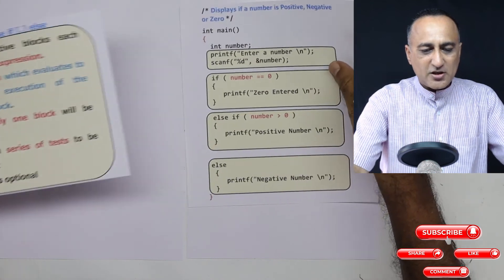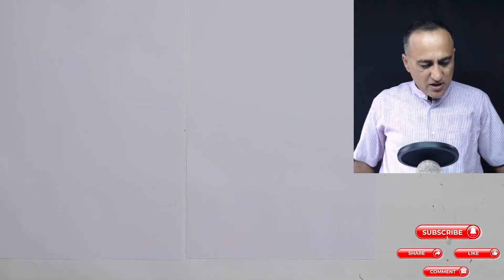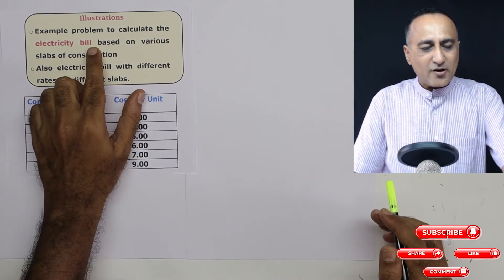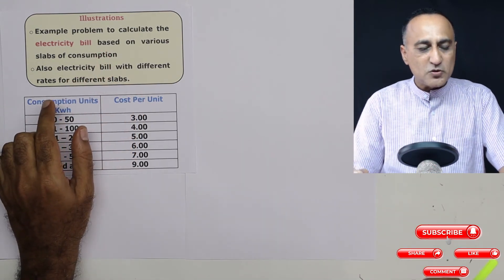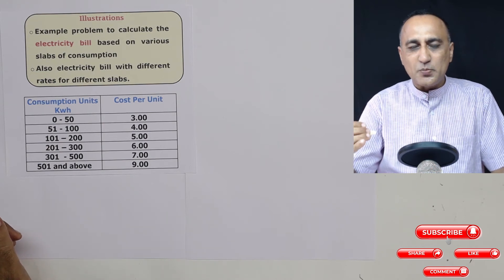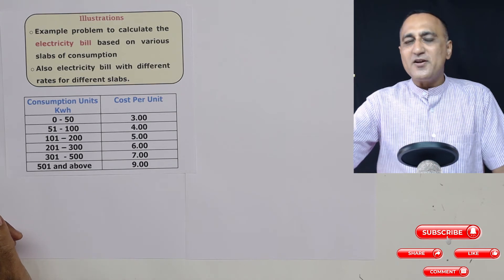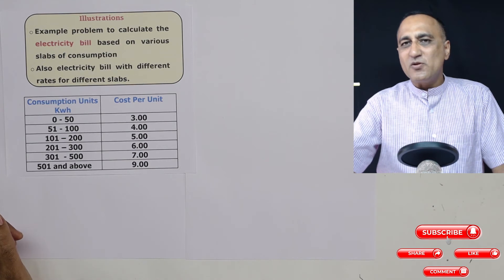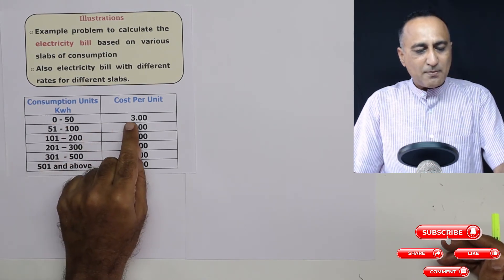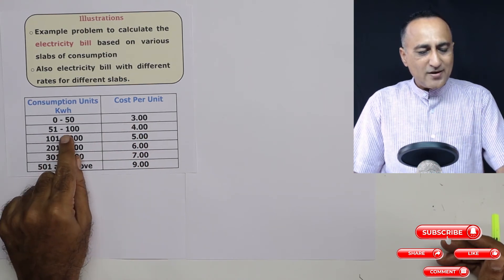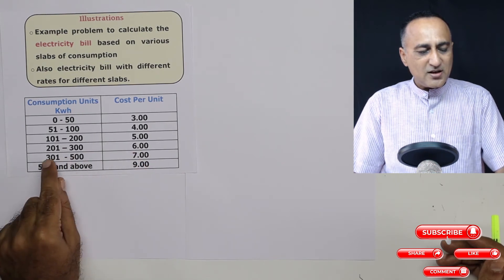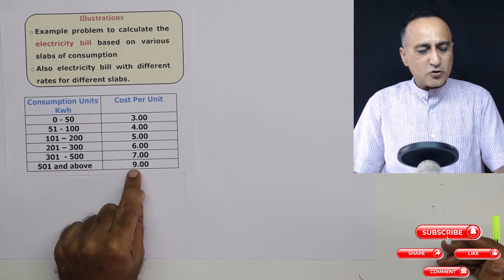Let's take a situation where cascaded if-else statements are useful: calculating an electricity bill based on kilowatt-hours used per month. The rate table is: 0–50 units at 3 rupees per unit, 51–100 units at 4 rupees, 101–200 units at 5 rupees, 201–300 units at 6 rupees, 301–500 units at 7 rupees, and 501 and above at 9 rupees per unit.